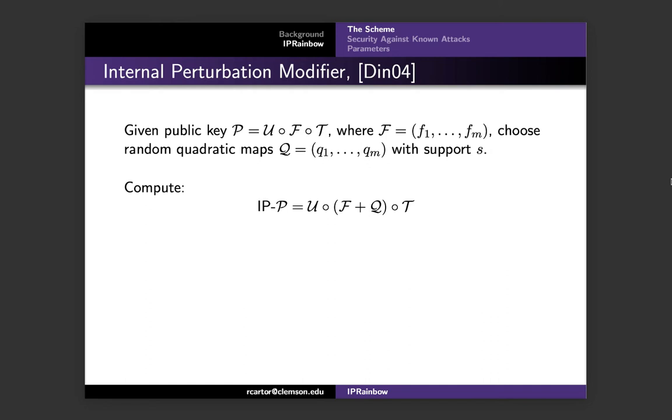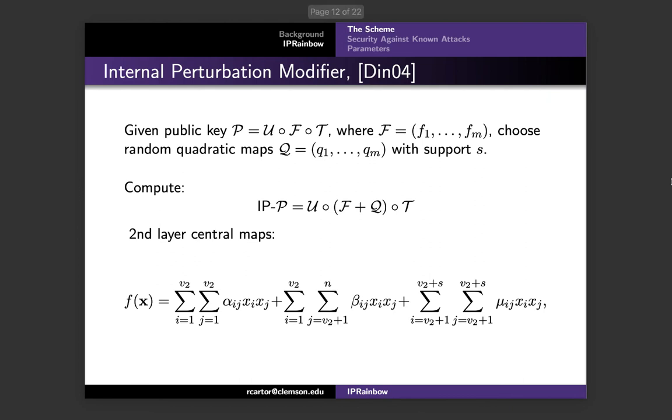Specifically, we're considering applying the internal perturbation or IP modifier introduced by Ding in 2004 to the rainbow scheme. When we add an IP modifier, we are going to choose a vector of length m, which we will call q. So q is composed of m quadratic functions. Then we will apply the IP modifier by adding the functions in q to the original central maps in f. The support of q is s. So to define IP rainbow, we're going to keep the layer one central maps the same, and then internally perturb the second layer maps. So specifically, we will consider an internally perturbed second layer homogeneous equation of the form normal layer two central map plus quadratic map concerning s layer two variables.